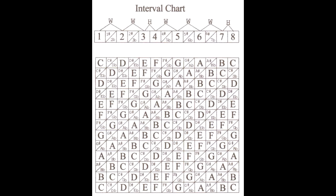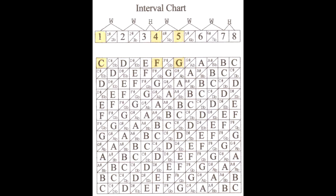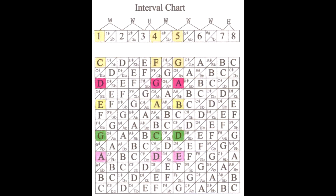Here is the interval chart. We can also use this chart to transpose compositions. Here is the 1, 4, 5 example I talked about earlier in the key of C. When we transpose to other keys we can see a pattern that emerges.